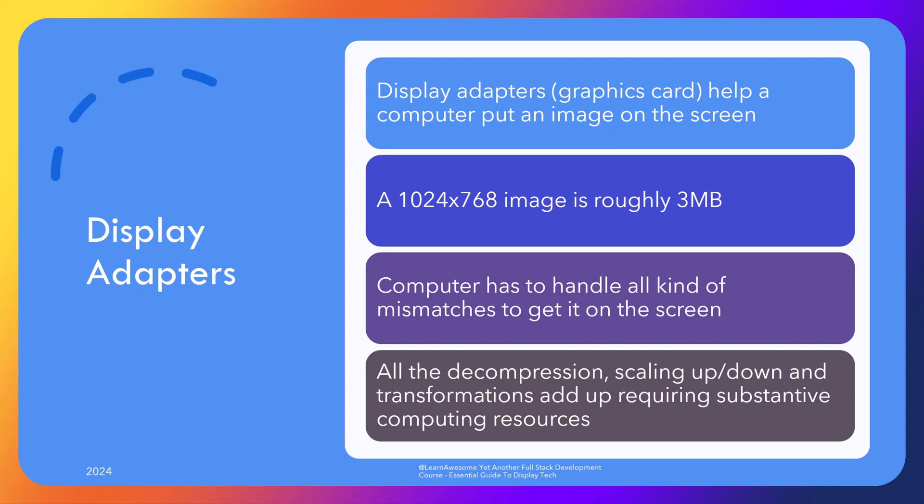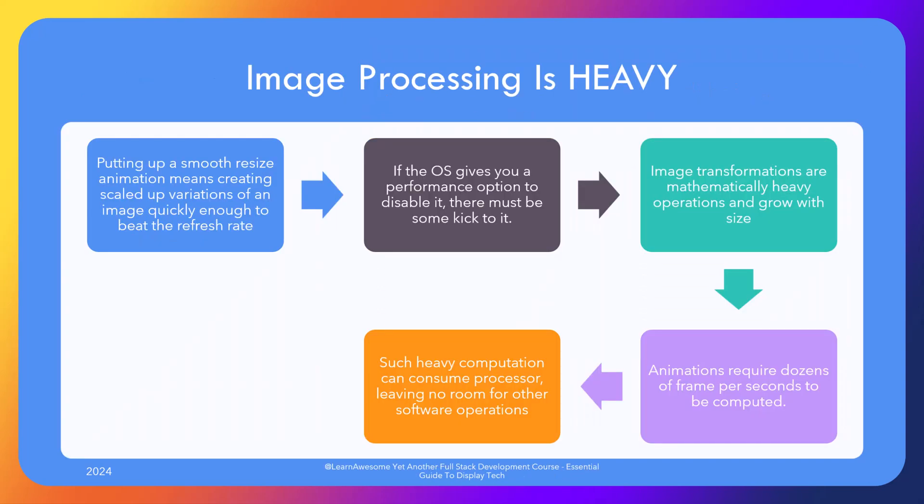Your monitor's display resolution and aspect ratio are hardly the same as the image you started with, so another transformation is required. And if the user drags the browser window across the screen or resizes it, there used to be an optimization setting in Windows to disable the resize animation which shows the browser screen inflating to occupy the display if you click the maximize button. Though rarely required with modern equipment, it gives you an idea of how heavy that simple operation is that the operating system provides a performance-related option. All of these scale-up, scale-down, and transform operations are heavy, requiring lots of matrix multiplication and other operations — leaving little processor capacity left for the actual useful work you are trying to do.